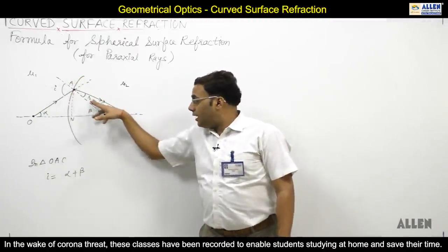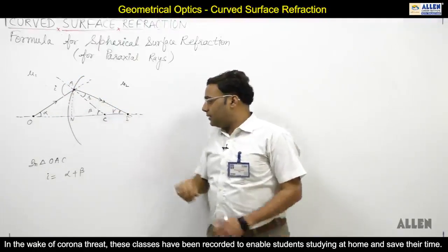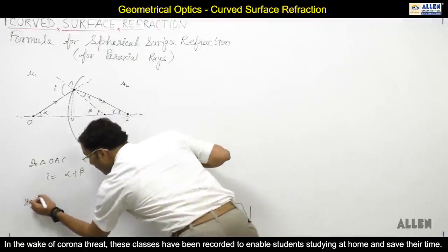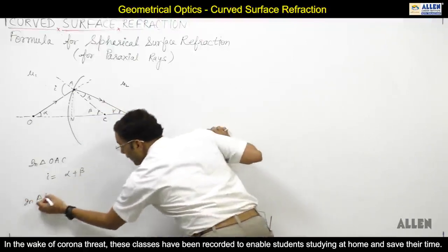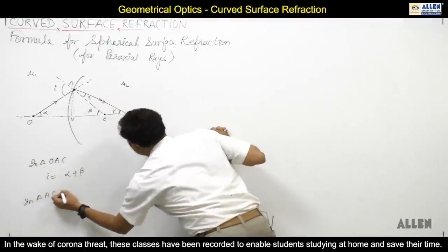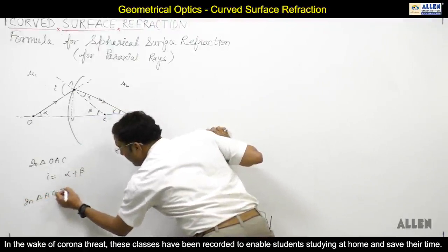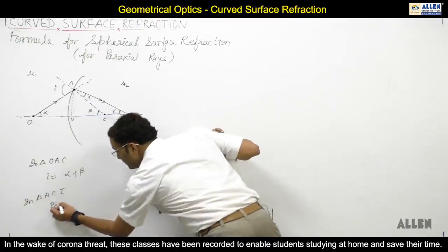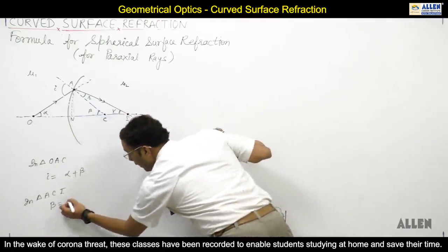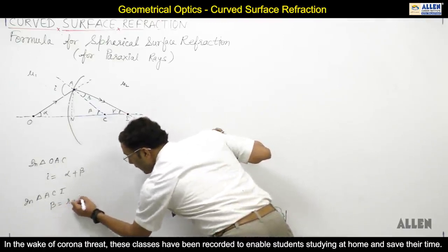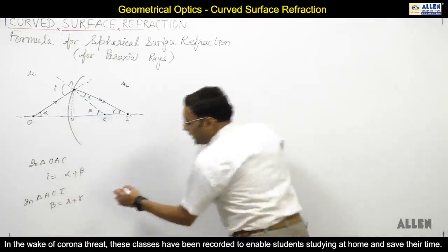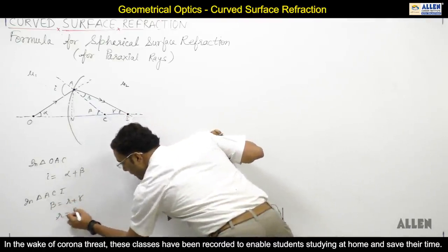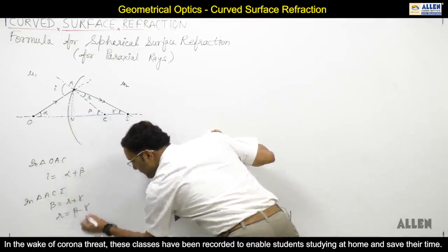The interior angles of triangle ACI give us R and gamma. So in triangle ACI, beta is equal to R plus gamma. Therefore, R turns out to be beta minus gamma.